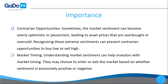Third, identifying opportunities — sometimes market sentiment can become overly optimistic or pessimistic, leading to asset prices that are overbought or oversold. Recognizing these extreme sentiments can present contrarian opportunities to buy low or sell high. Fourth, market timing — understanding market sentiment can help investors with market timing, choosing to enter or exit a market based on whether sentiment is excessively positive or negative.